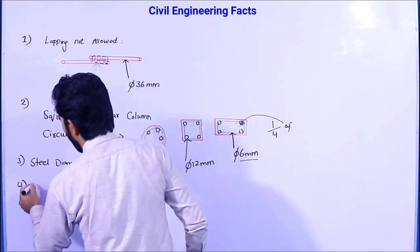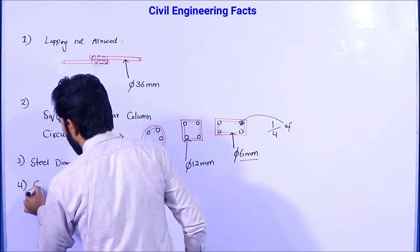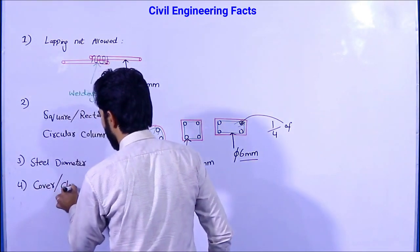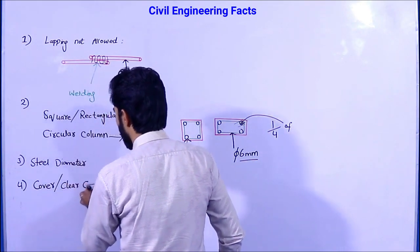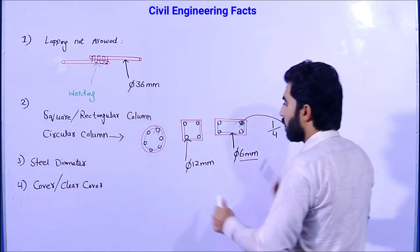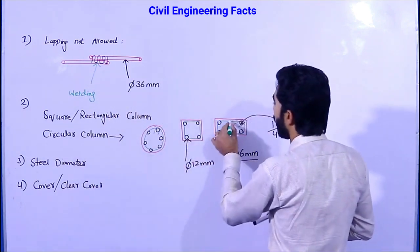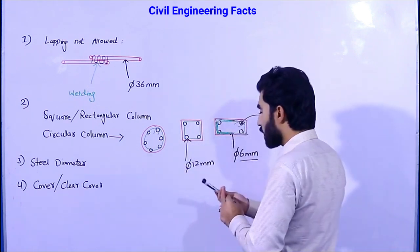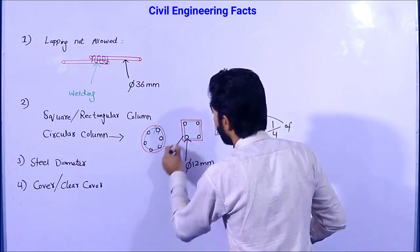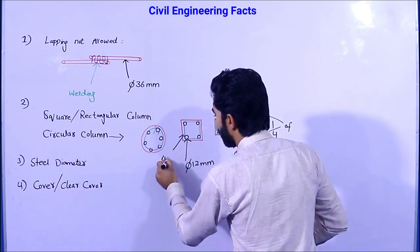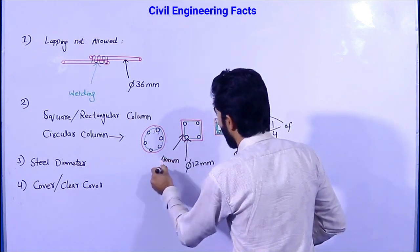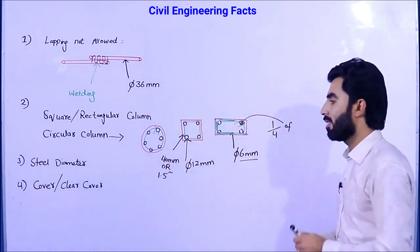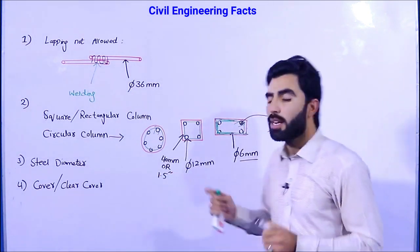The fourth fact is about concrete cover, also called clear cover. For any column — circular or rectangular — the concrete cover should not be less than 40 mm, or 1.5 inches. This is a fixed engineering standard for concrete cover.